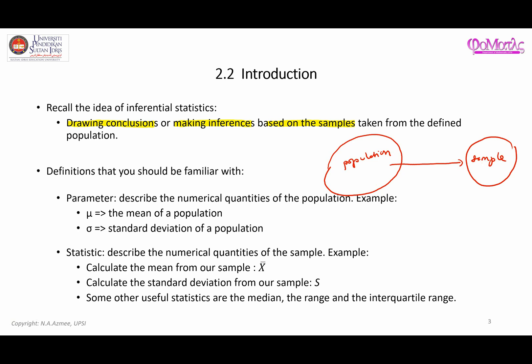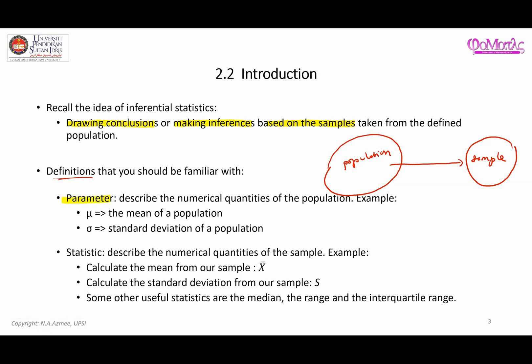With regards to these two terms — population and sample — we have another two definitions that you should be familiar with. The first one is parameter, where it is basically a quantity that describes the numerical values of the population.